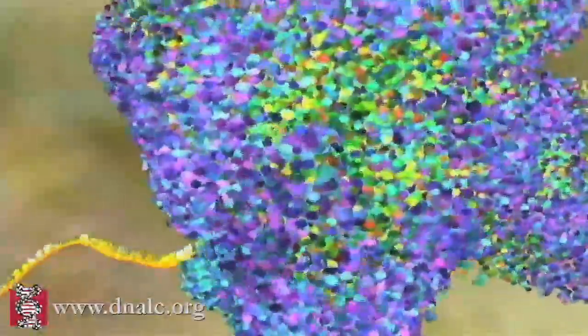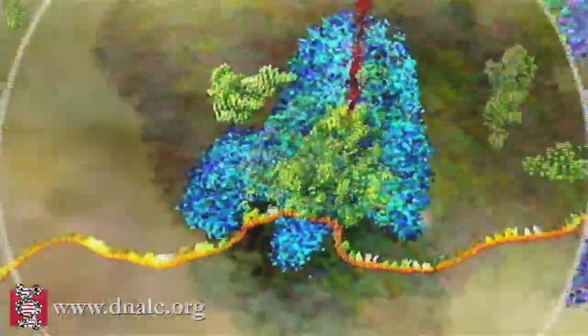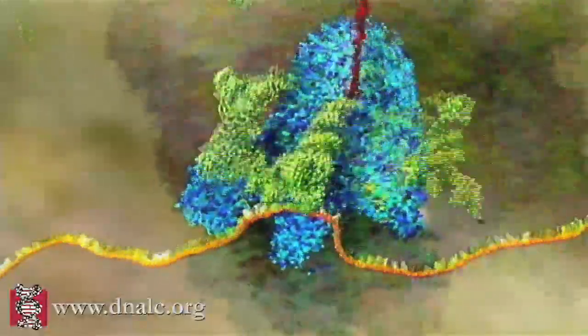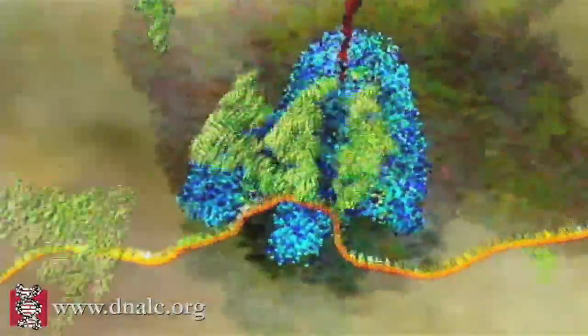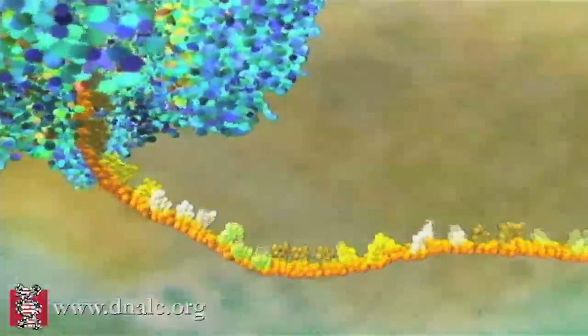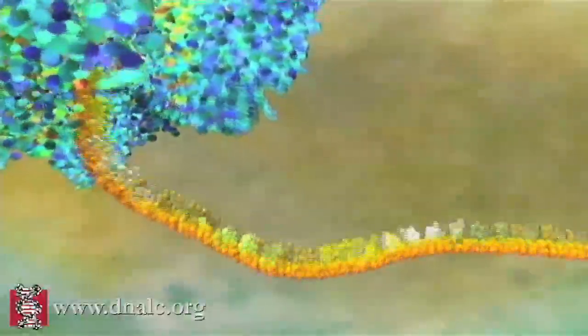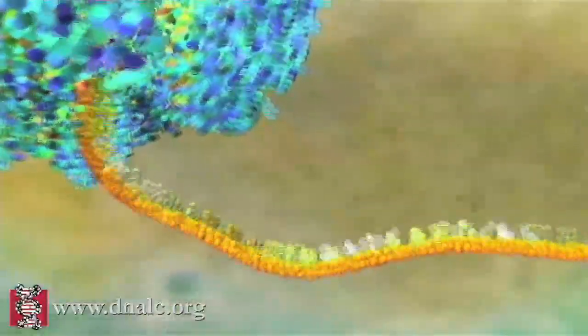Now we come to the heart of the process. Inside the ribosome, the RNA is pulled through like a tape. The code for each amino acid is read off, three letters at a time, and matched to three corresponding letters on the transfer molecules.